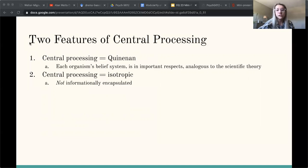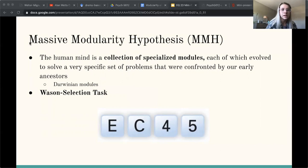And then the massive modularity hypothesis. Briefly, I just want to say that the human mind is a collection of specialized modules, each of which evolved to solve a very specific set of problems that were confronted by our early ancestors. And we can call these Darwinian modules.